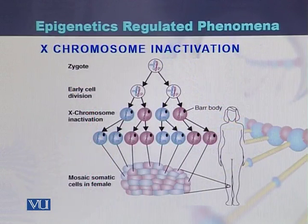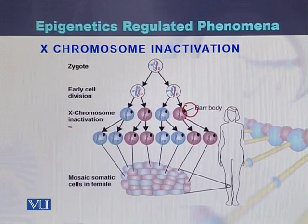Here we can see how X chromosome inactivation occurs in a female body. There are Barr bodies which are responsible for X chromosome inactivation. Due to inactivation of the X chromosome, we can see mosaic cells in a female.